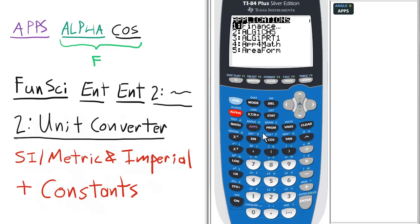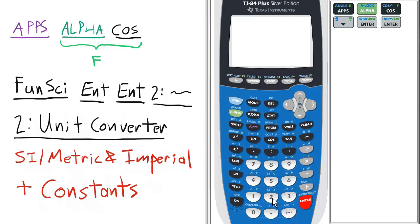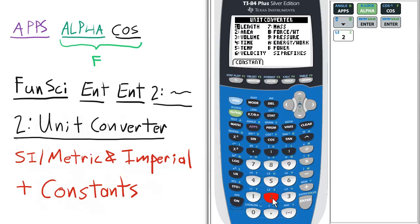Press apps, alpha, cosine for f, scroll down to FUNSI, press enter, enter, select option 2, unit converter.